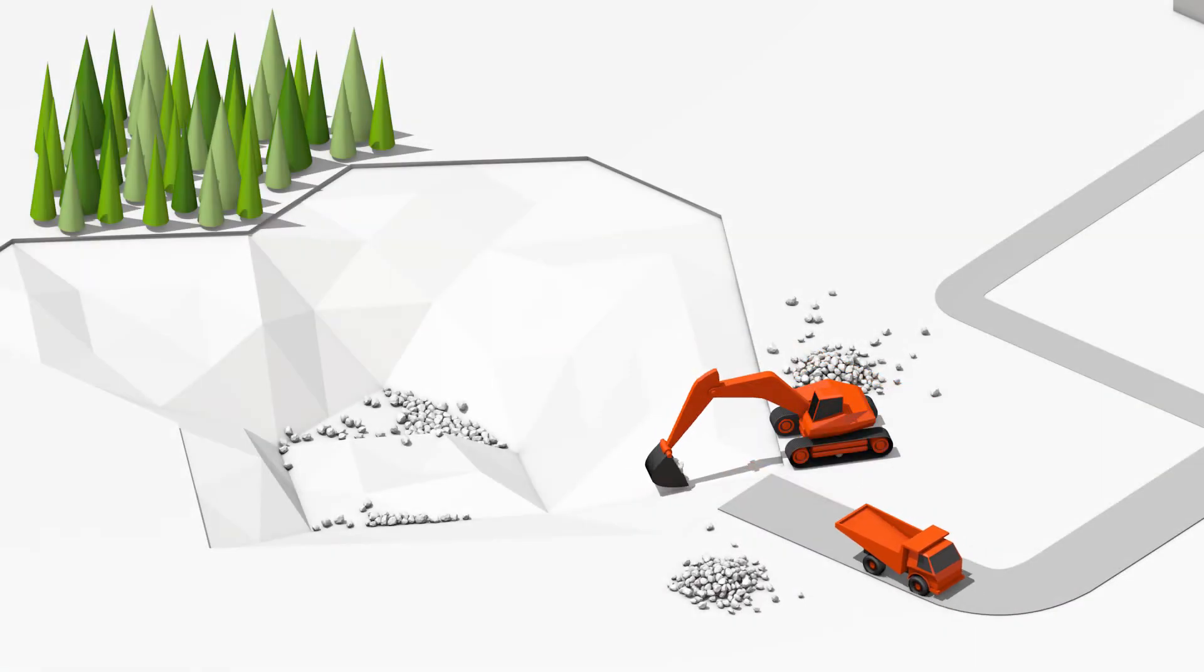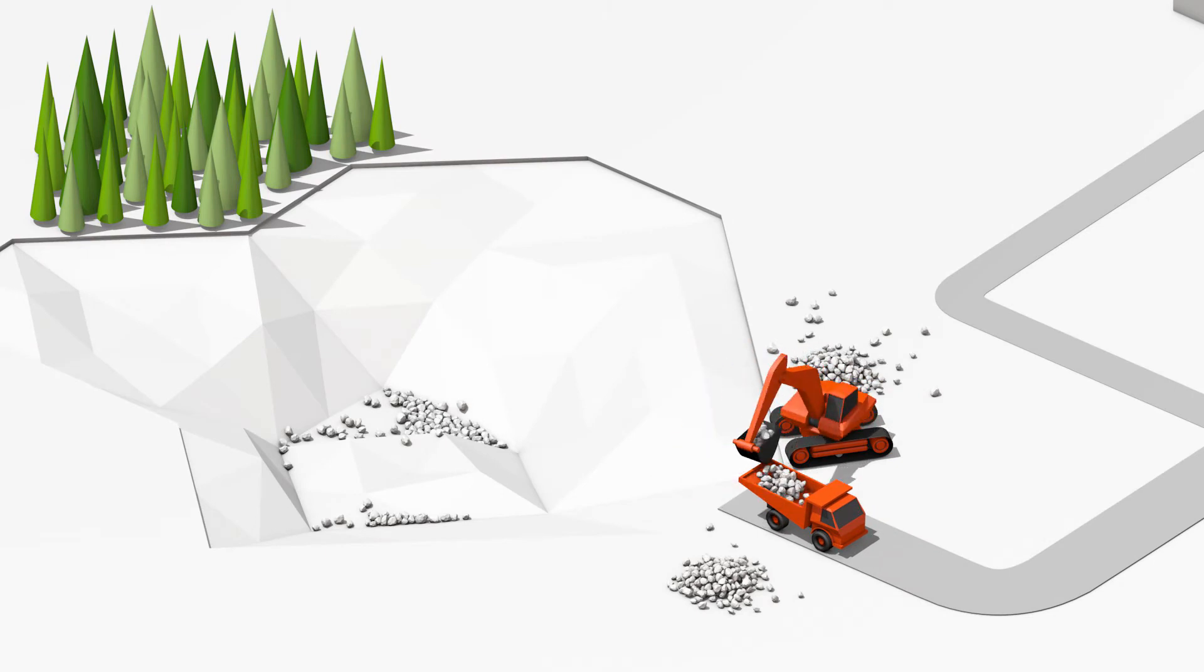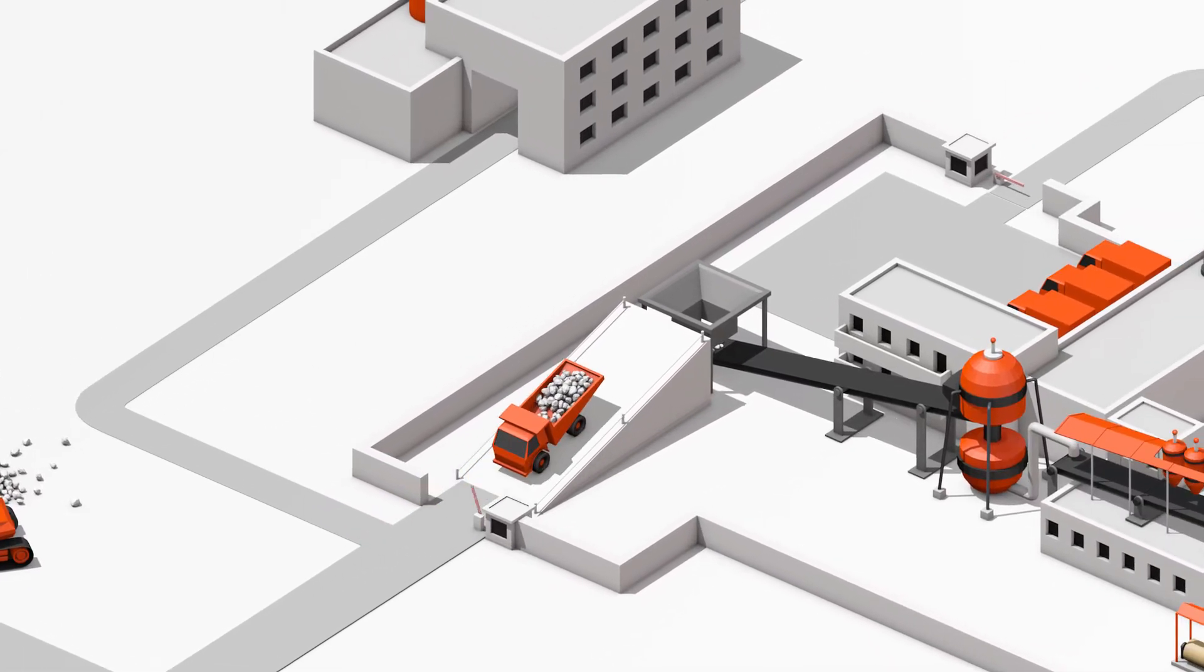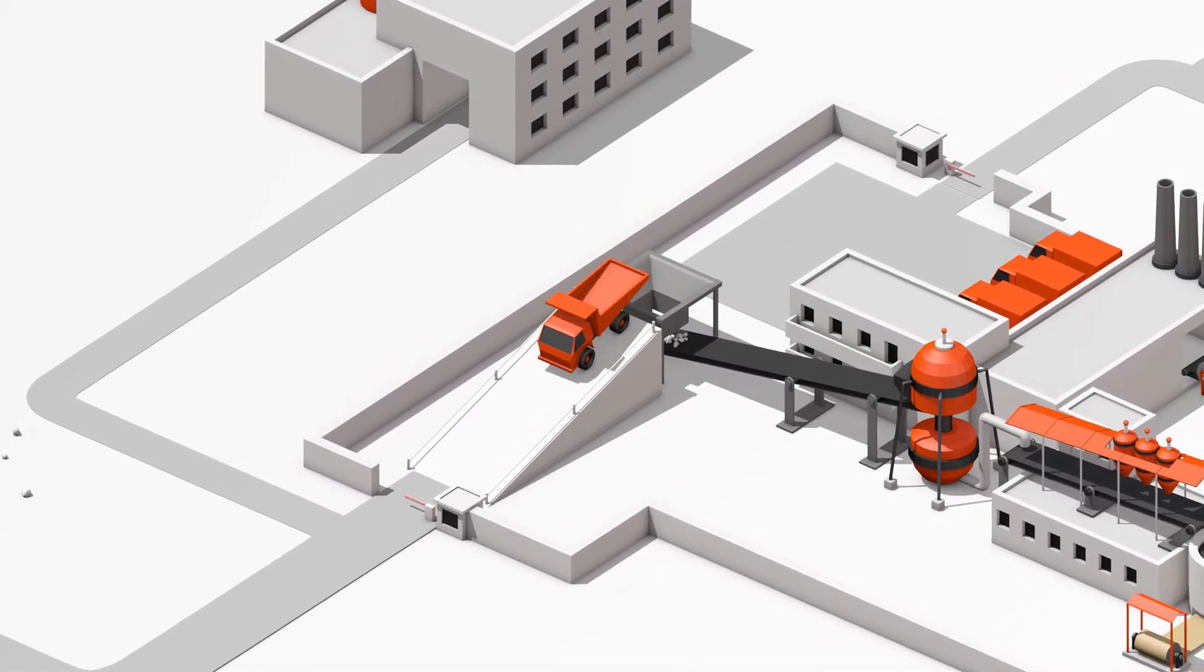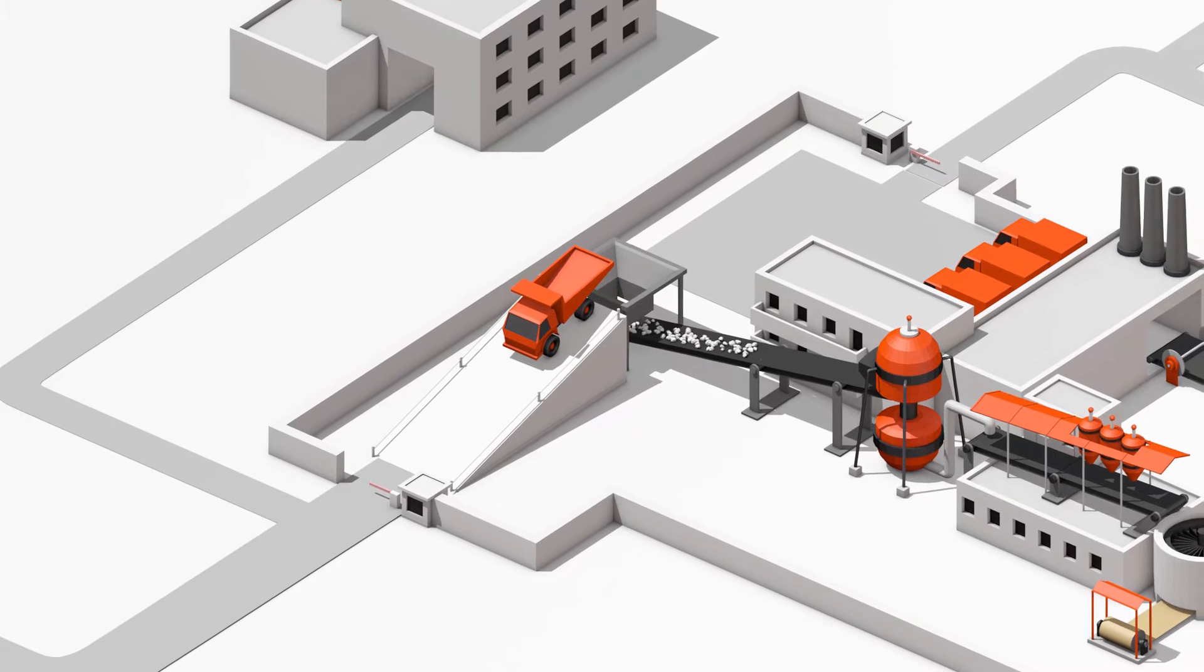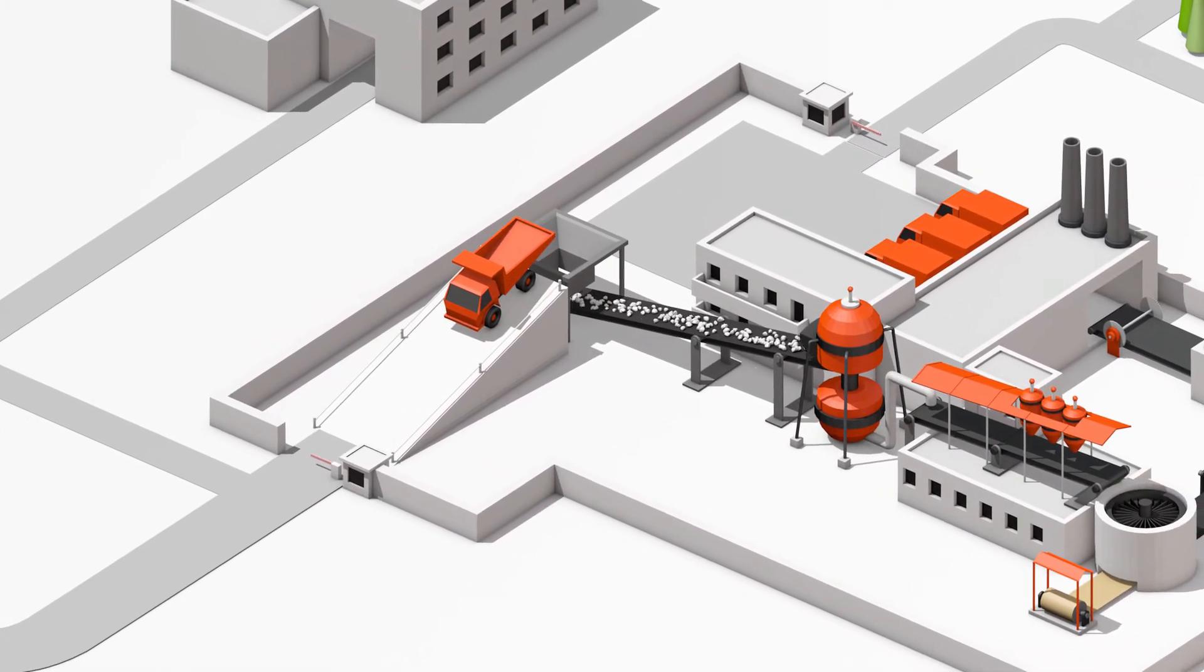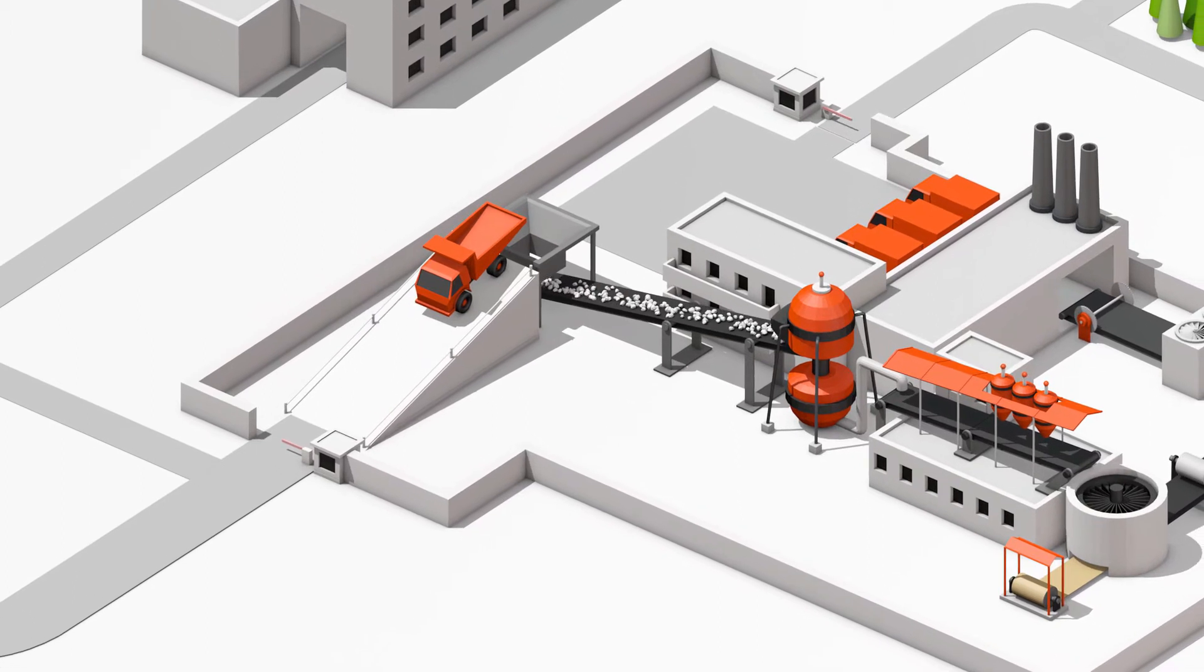At the beginning of our manufacturing process, we extract gypsum rock from a quarry and transport it by truck to our production site. There, the rocks are crushed into small pieces and homogenised. To achieve that, we arrange the gypsum in different layers that cut across each other in a huge production hall.